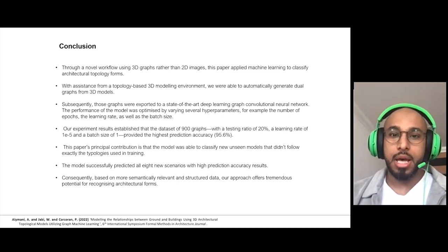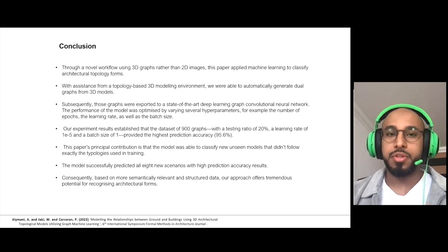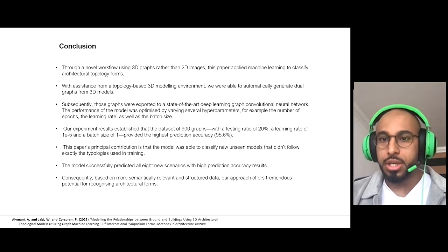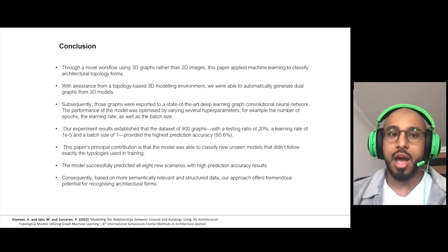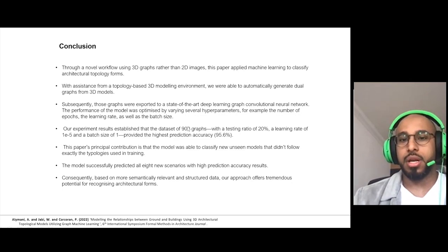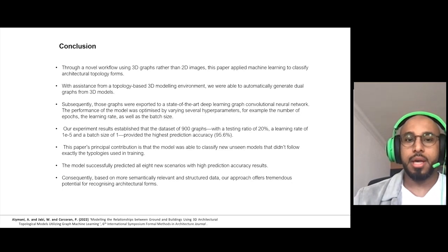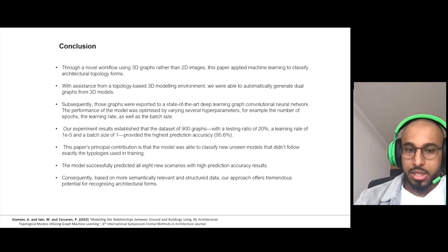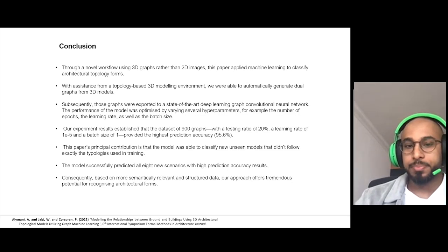In conclusion, we present here a novel proof of concept 3D graph rather than 2D image. And then we use the help of Topologic to run this graph inside the geometry. And then our experiment result with the 900 graphs is around 95.6%. And this paper contributes in that the model was able to classify new unseen models, like we saw in the last slide. And the model successfully predicted all the eight scenarios with high prediction accuracy results.